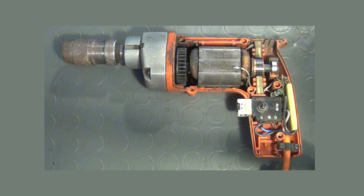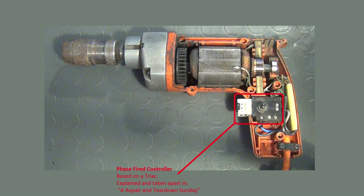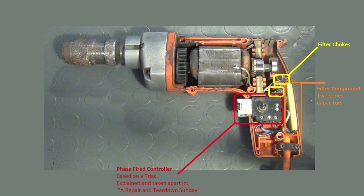From the power cord, the supply current first flows through the variable speed control unit. From an electronic viewpoint, it is a phase-fired controller based on a triac. I have explained its working principle and taken apart one of these units in my video A Repair and Teardown Sunday already though. And you can find a link to that video in the description below. Before the current reaches the universal motor, it passes a filter component that consists of two center-tabbed series capacitors, which are realized in one common housing. Also, part of the filter are two discrete filter chokes. Often the filter chokes are also integrated into one filter component together with the capacitors or they are missing completely, which is often done to cut down the price of the tool. Its main purpose is to keep the noise generated by the power drill from polluting the power grid, so to speak.